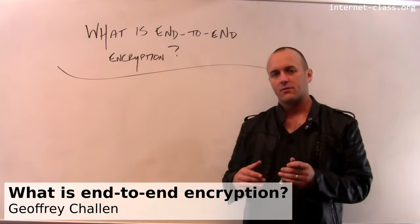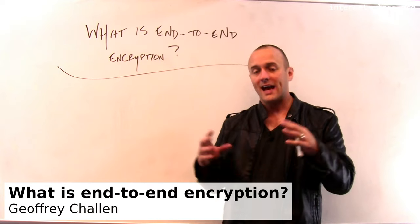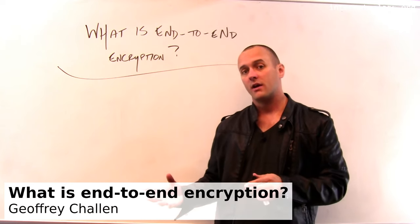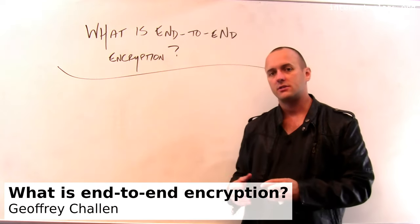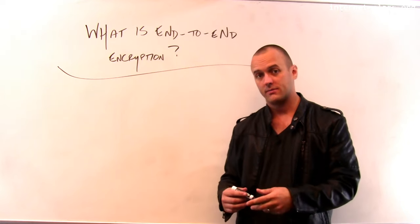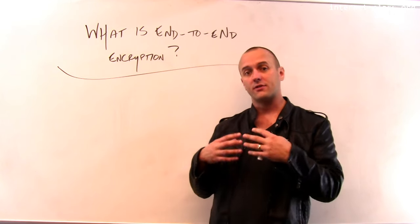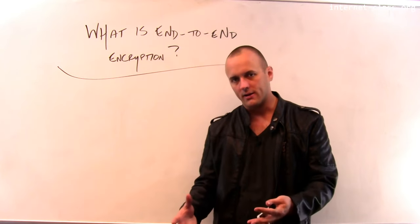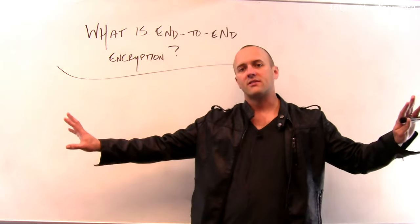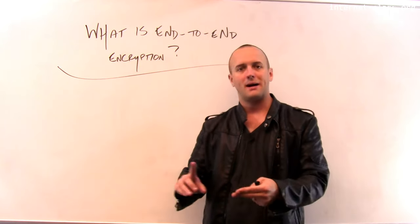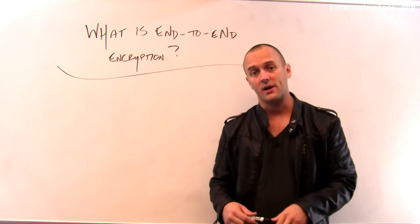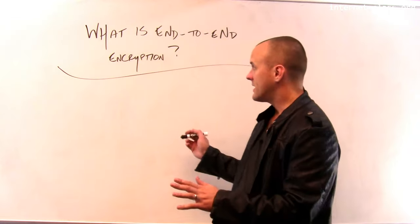End-to-end encryption refers to the process of having encryption done at the endpoints. On some level, this is related to the end-to-end principle - the idea that rather than having certain services provided within the core of the internet, we push those services out to the end hosts and they're done by clients and servers as part of their communication pattern.